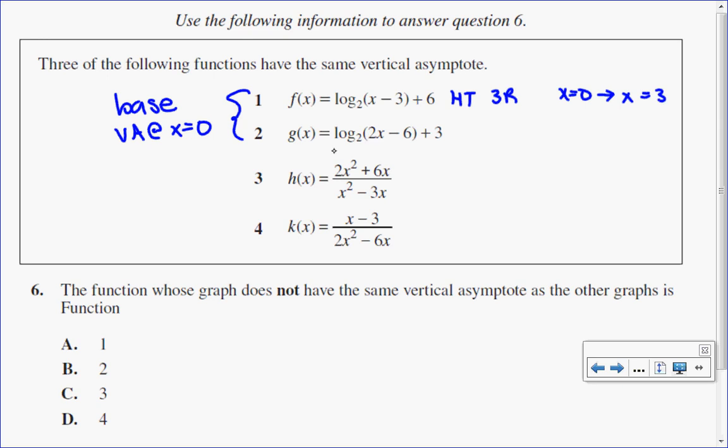In my next equation here, before I can determine what my translation is, I need to factor b. So I'm going to have log base 2 of, factor out a 2. 2x divided by 2 is x, take away 6 divided by 2 is 3, plus 3. So I can see this one here also has a horizontal translation of 3 units to the right, meaning that the vertical asymptote is also x equal to 3.